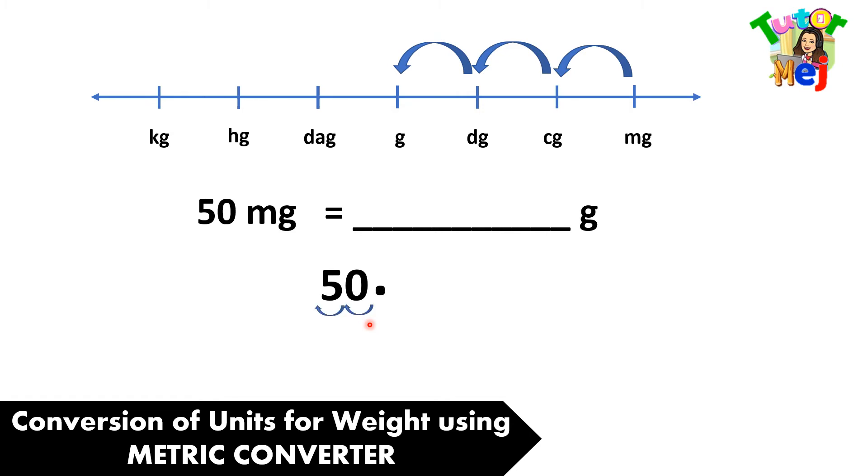then count 1, 2, 3 to the left, and affix your decimal point and zeros. Now, 50 milligrams equals 0.05 grams.